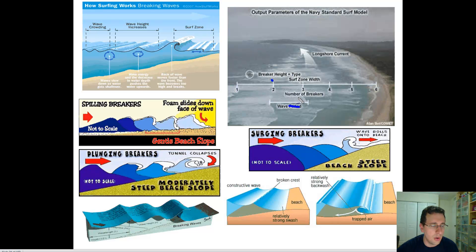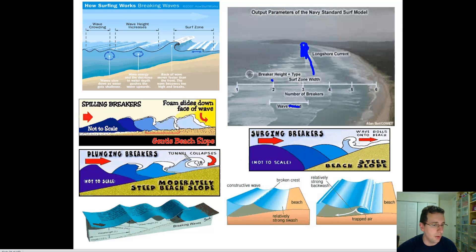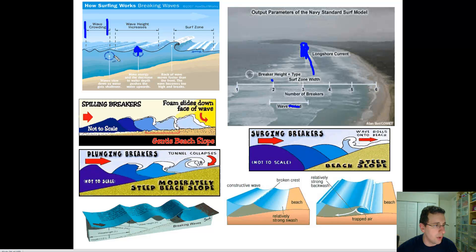The breakers will fall successively more and more as they approach the beach, and some waves will actually break several times as they roll towards shore. There's also something called a longshore current — a current associated with the wave motion as it approaches the beach. Wave crowding starts as soon as the waves slow down, then you get the increase in wave height. The energy of the wave is decreasing because it's touching the bottom, pushing water upwards. Eventually you reach the surf zone at one-twentieth of the wavelength, where the wave collapses because the front is moving much faster than the back.